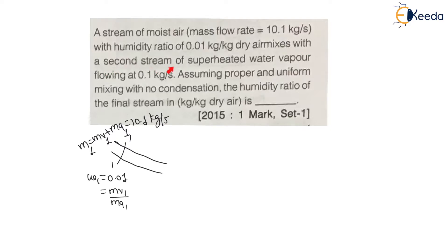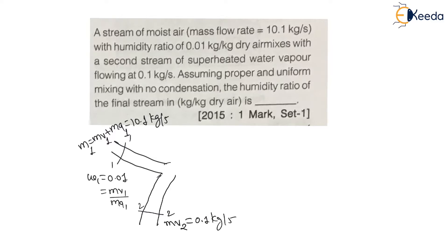This first stream mixes with a second stream of superheated water vapor flowing at 0.1 kg per second. Stream 2 contains only superheated water vapor — meaning there is no dry air in Stream 2. Therefore mass of air 2 equals zero.